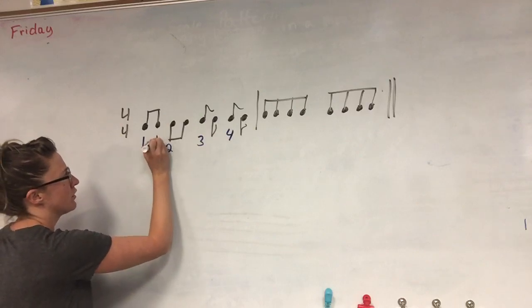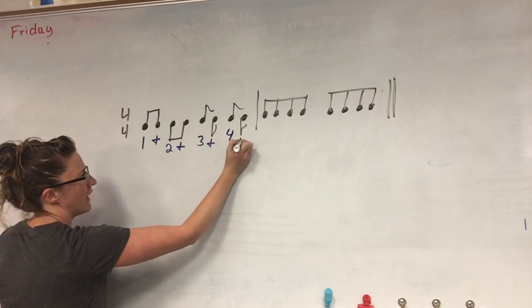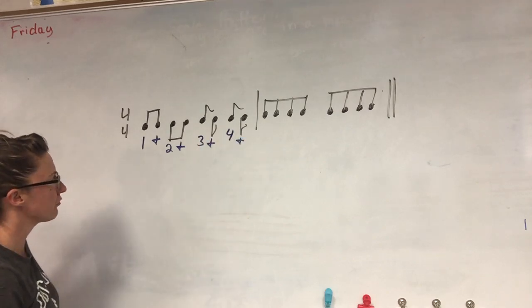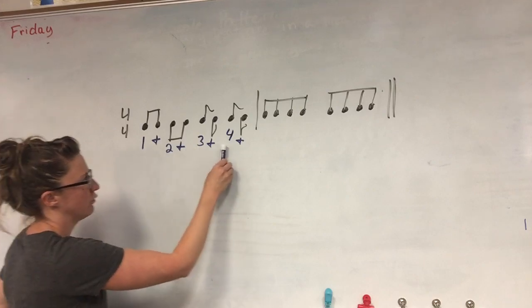The second half is always called the and. So after the number I always have an and for eighth notes. So that makes my first measure one and two and three and four and.